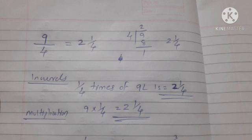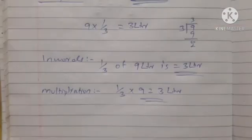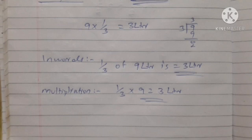In English, 1 by 4 times of 9 liters is 2 by 4. This is called 1 by 4. This is the answer. Now we can divide 9 liters by 6 liters. We can divide by 3. 3 is equal to 3 liters. So let us divide by 3. 9L divided by 3 is 3L. This multiplication: 1 by 3 into 9 is equal to 9L. That is 9 to 3.